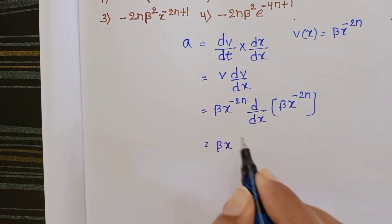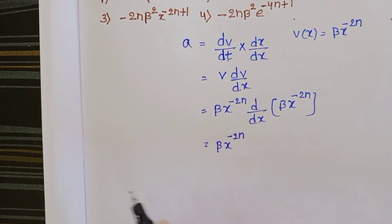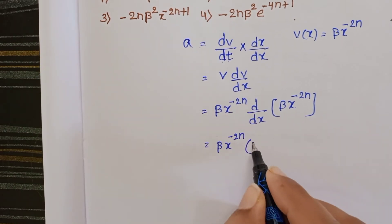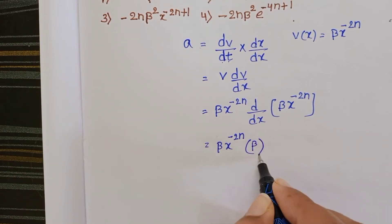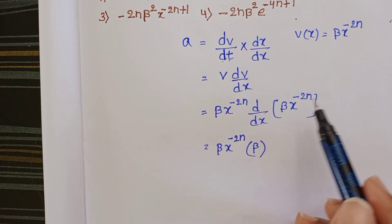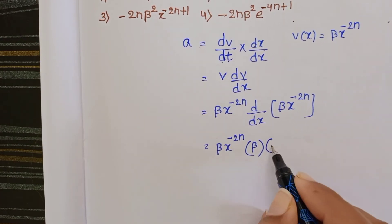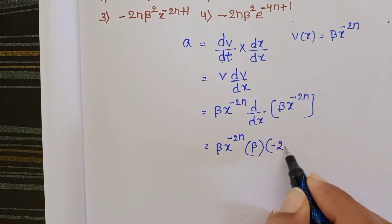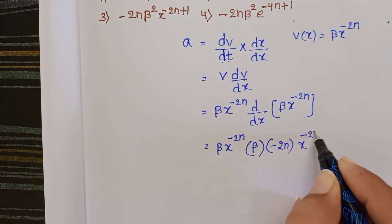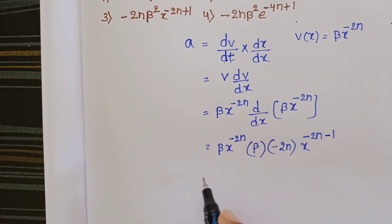Differentiating β·x^(-2n) with respect to x, where β is constant, using the rule d/dx(x^n) = n·x^(n-1), we get β·(-2n)·x^(-2n-1).